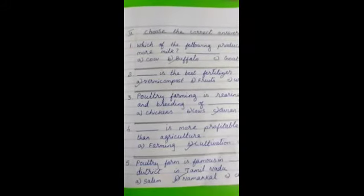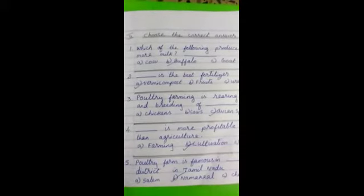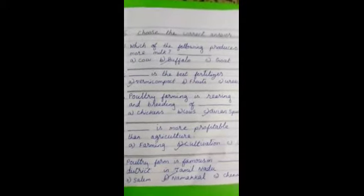Third one, poultry farming is rearing and breeding of dash. Answer, A, B, C options are there. Answer C, oven pieces. This is the correct answer. Put a tick in the C.